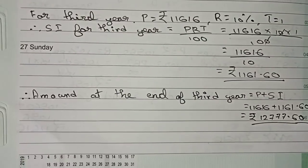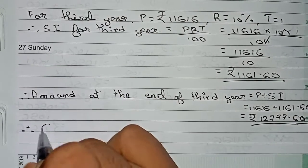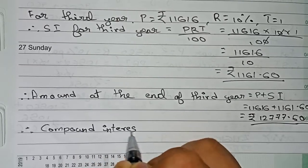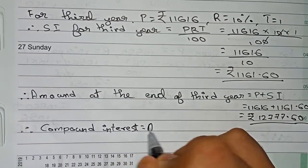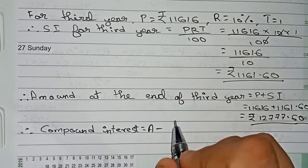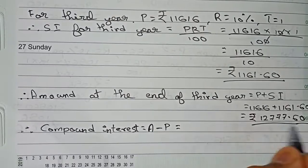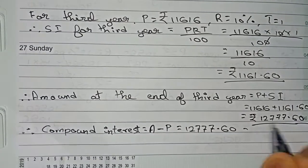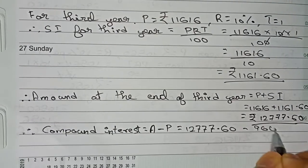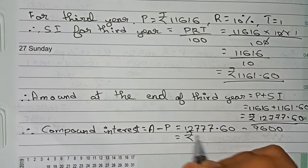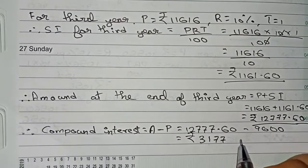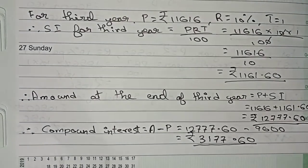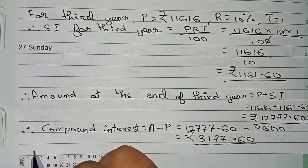Now for the compound interest for the third year: the formula is amount minus the original principal. So it is ₹12,777.60 minus the original principal ₹9,600, which gives ₹3,177.60. Therefore this is the compound interest for the third year.